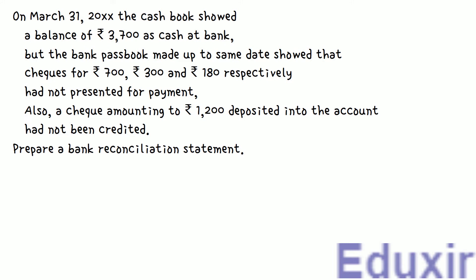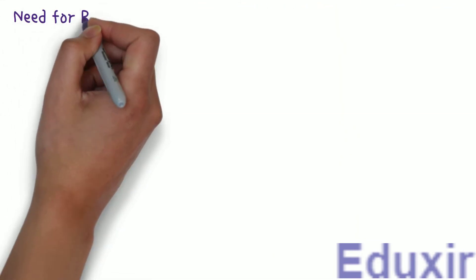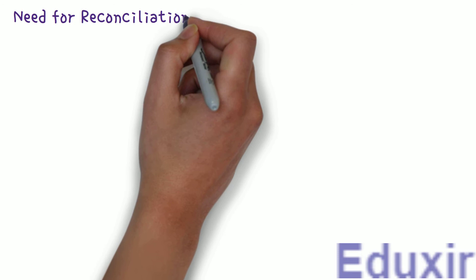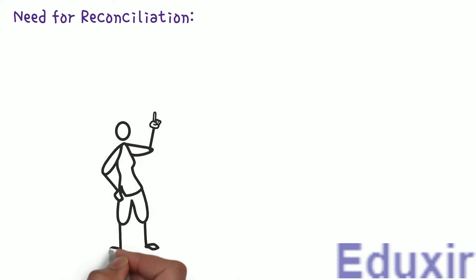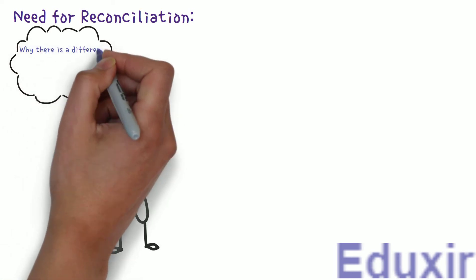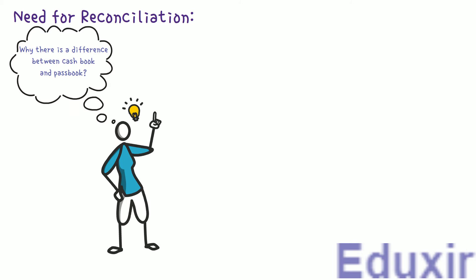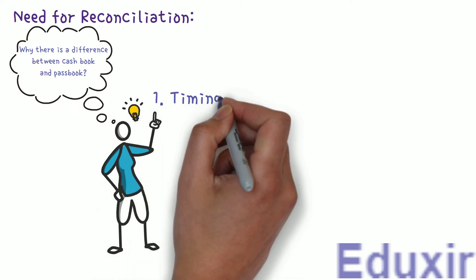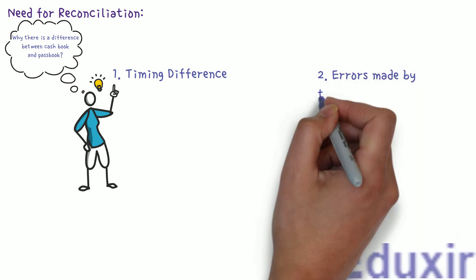Before we proceed with the analysis of these particulars, let us first recap a few details about bank reconciliation statement - specifically why there is a need for reconciliation. By preparing the bank reconciliation statement, we get an idea about why there is a difference between the cashbook and the passbook. The difference could be due to timing difference in recording the transaction, or errors made by the business or the bank.